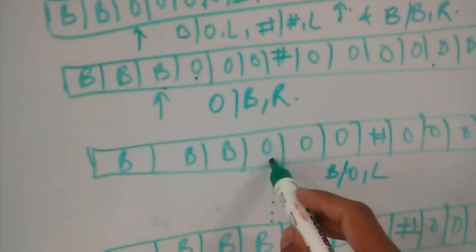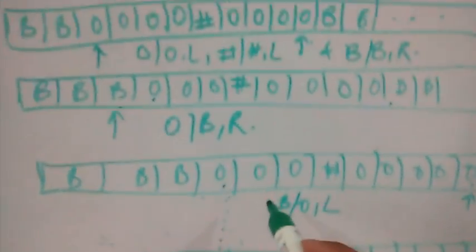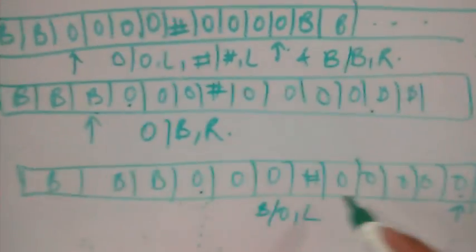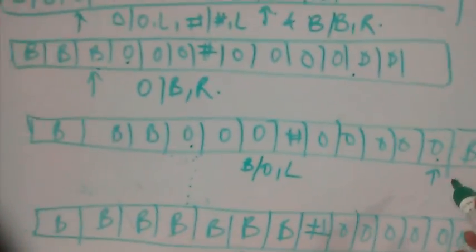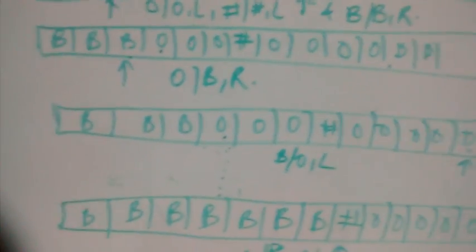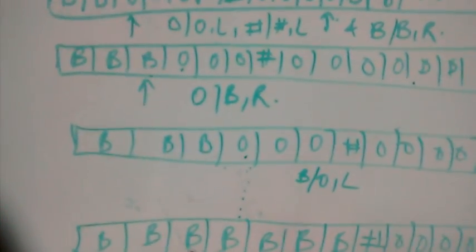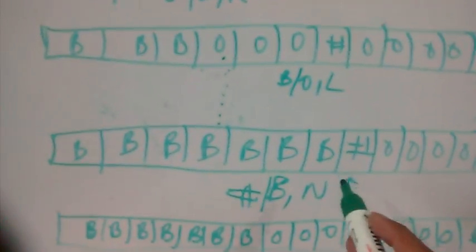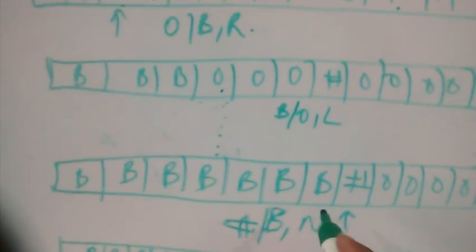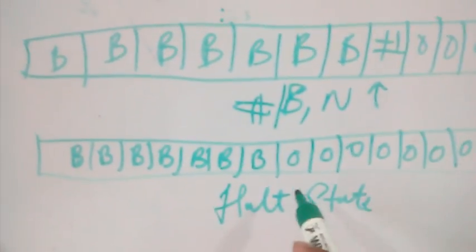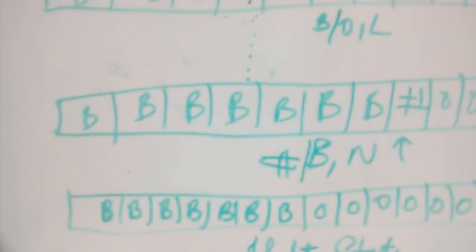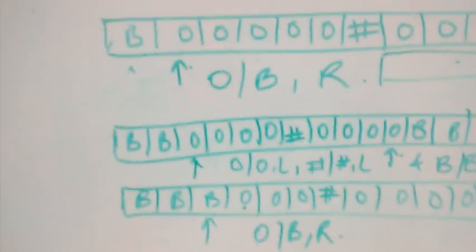It will go left again, detect the next zero and replace it with blank space, then come back to the right end. This will continue until all the zeros from the left side are copied over and the result is on the right side. Finally, we replace this hash with blank space, and we have our result.